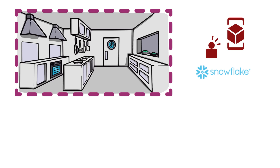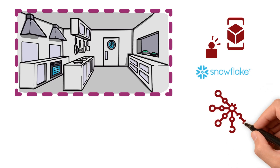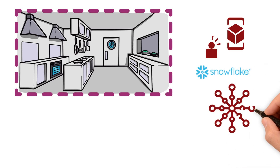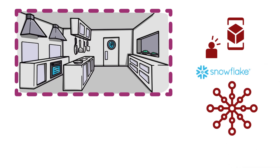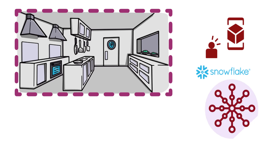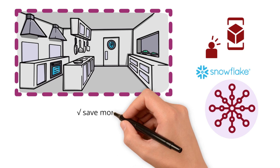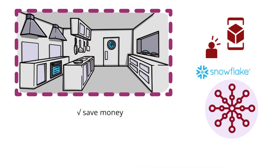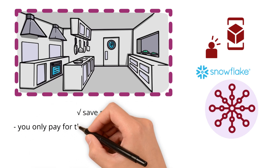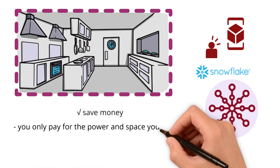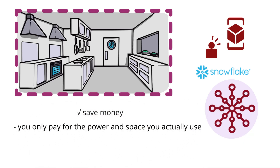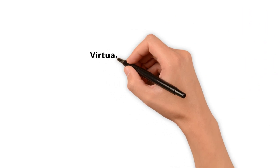In Snowflake, this kitchen is scalable, which means you can make it bigger or smaller depending on how much work you need to get done. This flexibility helps you save money because you only pay for the power and space you actually use.